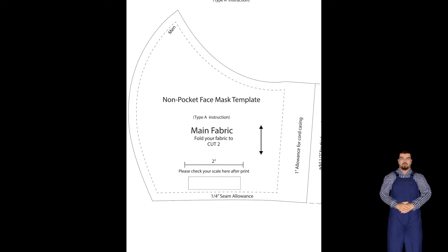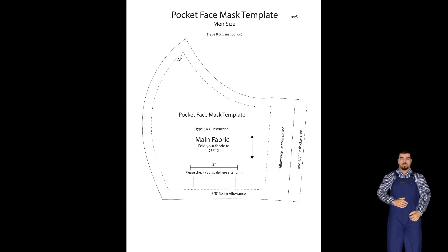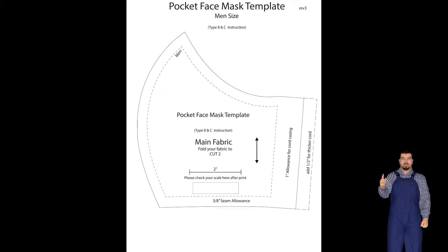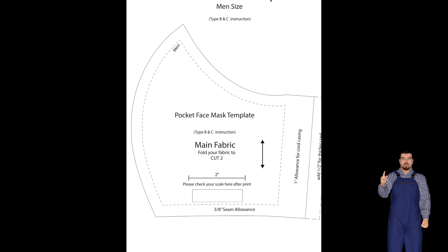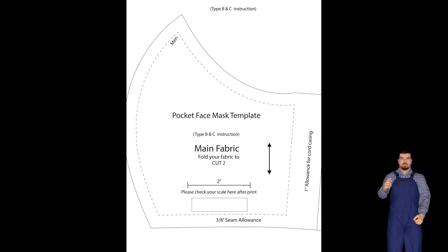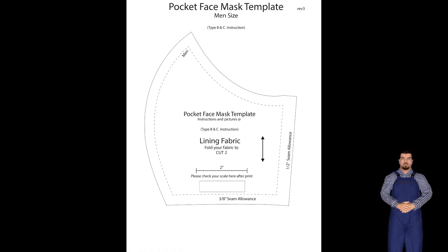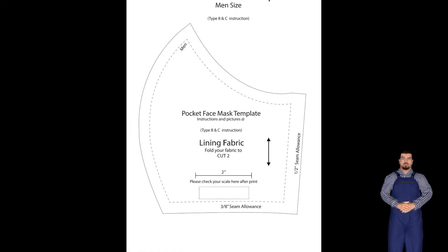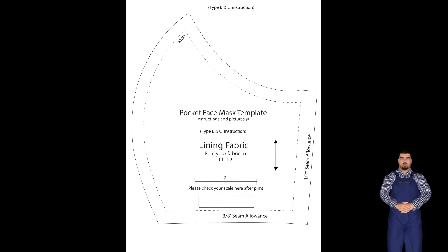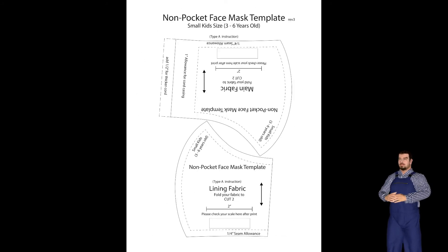5. Silhouette Machine Studio 3 files with 1/4 inch seam allowance included. Use only on Type A, all four sizes, in a zip file.